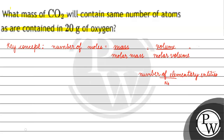Now, if we look at this problem, we have carbon dioxide and we need to find the mass that contains the same number of atoms as in 20 grams of oxygen. First, we find the number of atoms in 20 grams of oxygen, and then we equate the number of atoms in carbon dioxide.